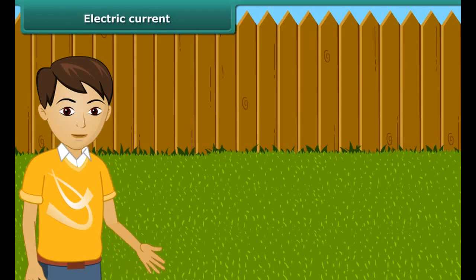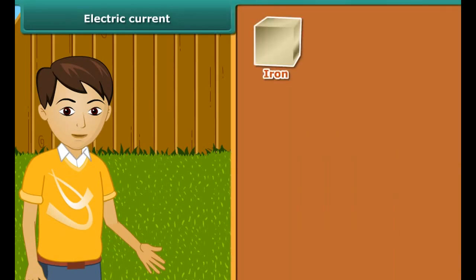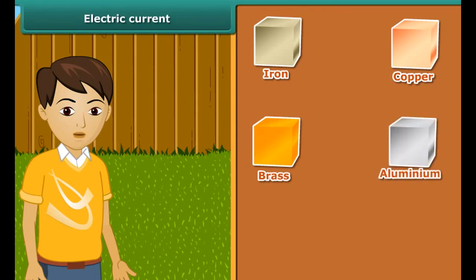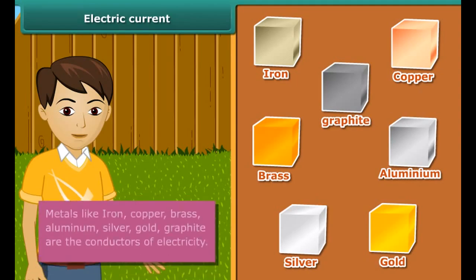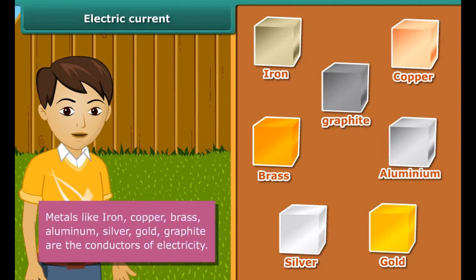Thus a cell is a simple device in which chemical energy is changed into electric energy. Some materials allow electric current to pass through them, others do not. The materials that allow electric current to pass through them are called conductors.